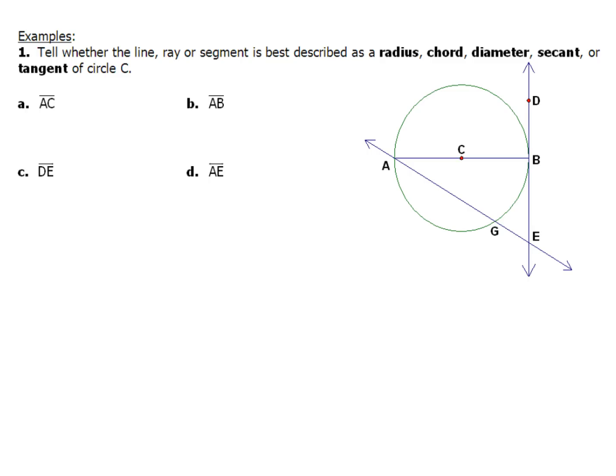So here, for example, number one, we've got to tell whether each one of these pieces is best described as a radius, chord, diameter, secant, or a tangent of our circle C. So let's take a look at our first piece here, AC. Well, from that spot to that spot, we can pretty clearly tell that that is going to be a radius. That's all there is to it. Now for our next piece, we've got segment AB. So A is going to start here, and B is going to end right there. So we've got a segment that is where the endpoints are on the edge of the circle, and notice it goes through the center of the circle. Therefore, it is going to be called a diameter.